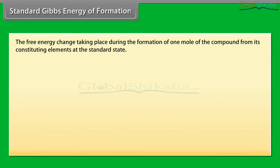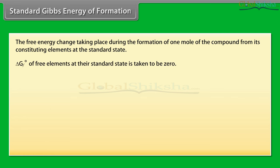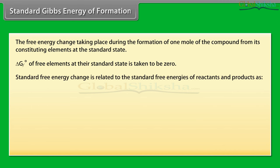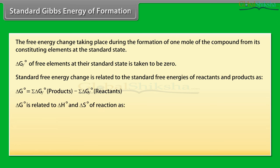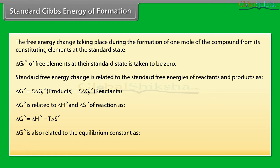Standard Gibbs energy of formation: the free energy change taking place during the formation of one mole of a compound from its constituting elements at standard state. ΔG°_f of free elements at standard state is taken to be zero. Standard free energy change is related to standard free energies of reactants and products as: ΔG° = ΣΔG°_f (products) − ΣΔG°_f (reactants). ΔG° is also related to ΔH° and ΔS° as: ΔG° = ΔH° − TΔS°. ΔG° is related to the equilibrium constant as: ΔG° = −2.303 RT log K.